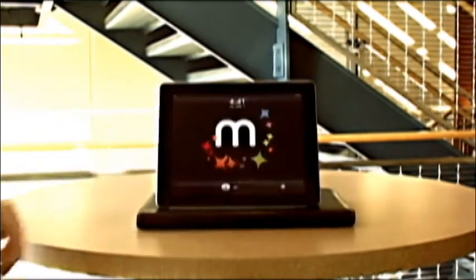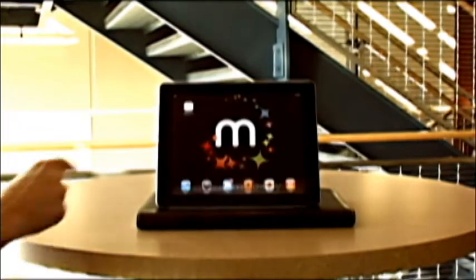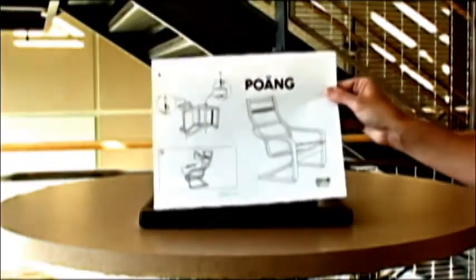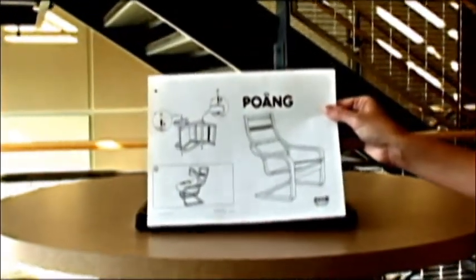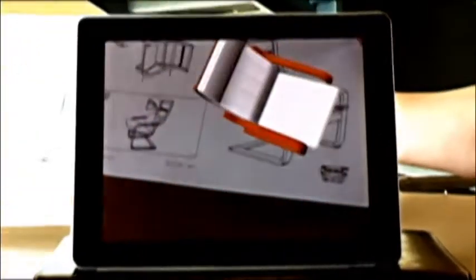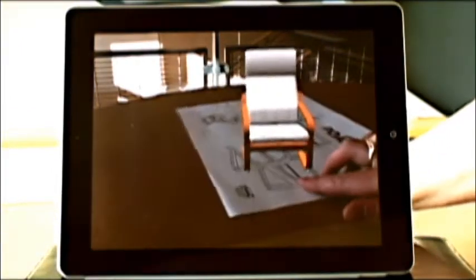This example of Merlin mobility is going to show how we can bring a set of printed instructions to life. We launch the Merlin app and now this set of instructions, there is nothing special about them. They are straight out of the box and you'll see that we will put the instructions behind the iPad and it will show us a model of what this finished chair will look like.